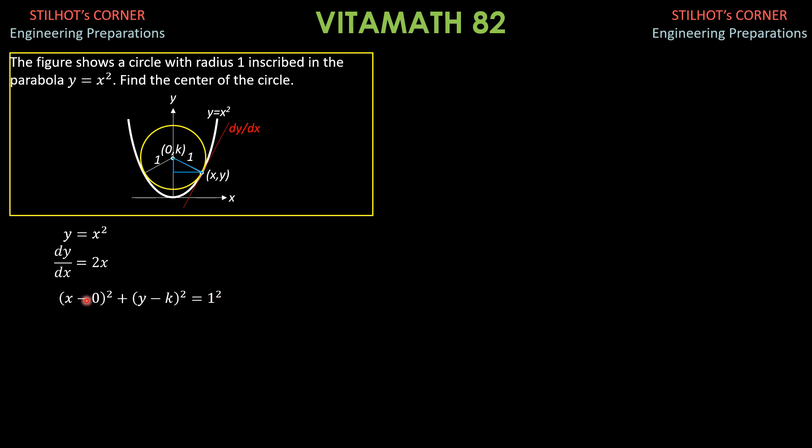And actually, this is the standard equation of a circle with center at h comma k. So, h happens to be 0 in this problem. Simplifying, we have x square plus quantity y minus k square equals 1. So, obtaining the derivative so that we can derive also dy dx for the circle. So, 2x plus 2 quantity y minus k raised to 1 times derivative of y minus k, which is dy dx equals 0. Cancel out 2. So, this reduces to x plus y minus k times quantity dy dx equals 0.